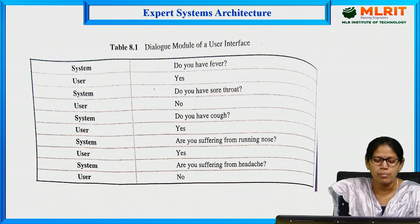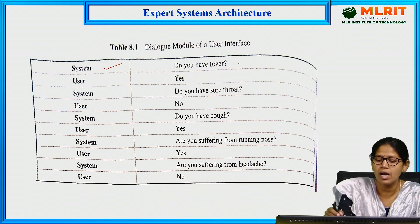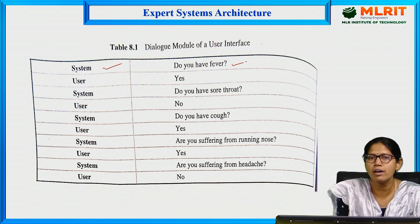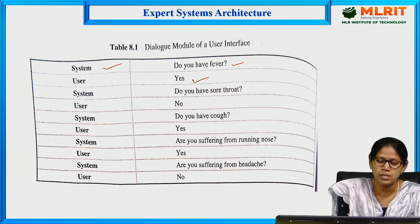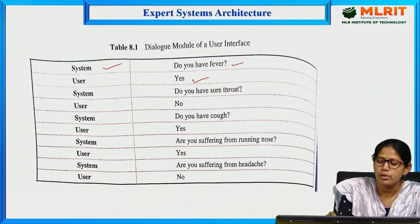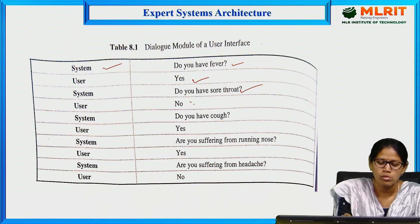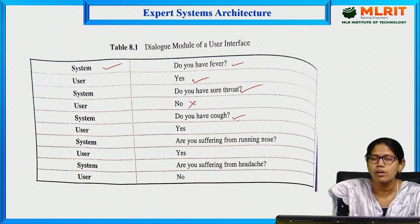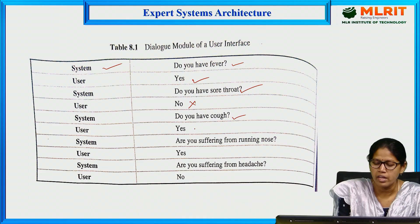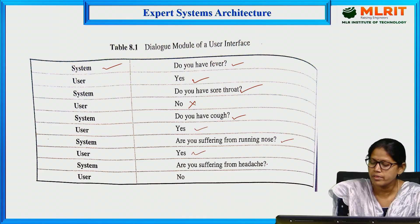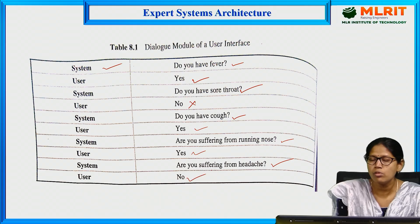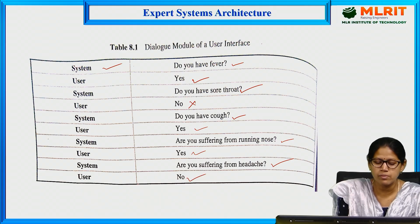Let us see one example. The system asks: Do you have fever? User: Yes. System: Do you have sore throat? User: No. System: Do you have cough? User: Yes. System: Are you suffering from running nose? User: Yes. System: Are you suffering from headache? User: No. In such a way the system interacts with the user.